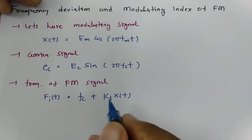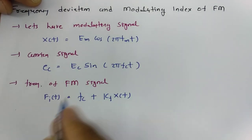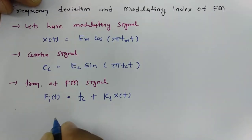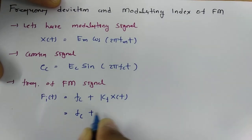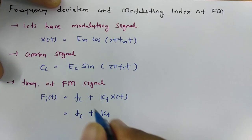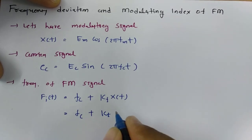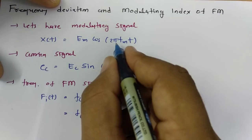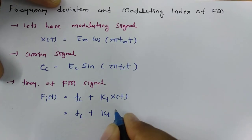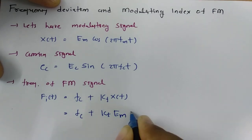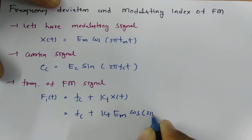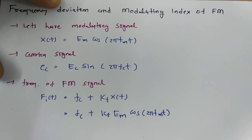If we place the value of Xt, then F(t) becomes Fc plus Kf into Em cos(ωm t), where ωm is 2π fm. So this simplifies to Fc plus Kf·Em·cos(2π fm t).